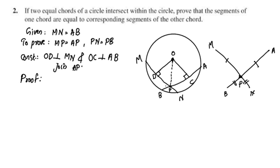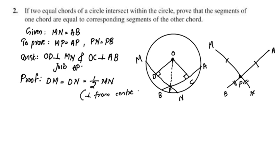DM is equal to DN. Similarly, since the perpendicular from the center bisects the chord, we can use this theorem as our reason. DM is equal to DN.